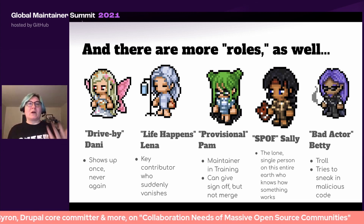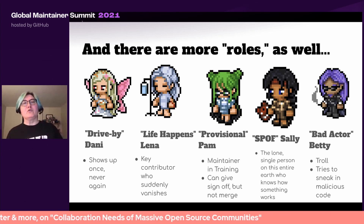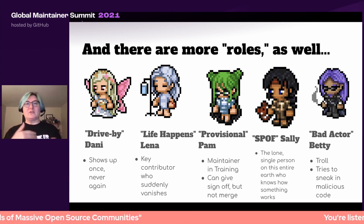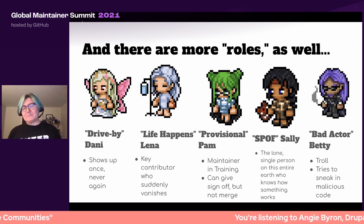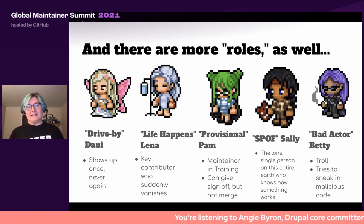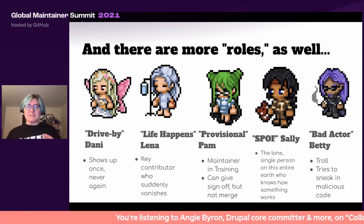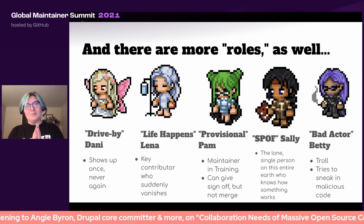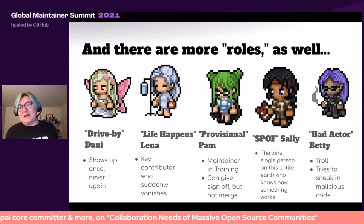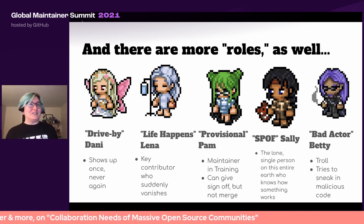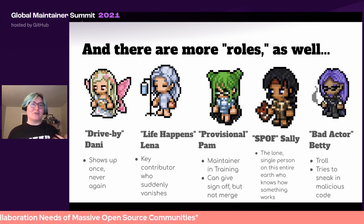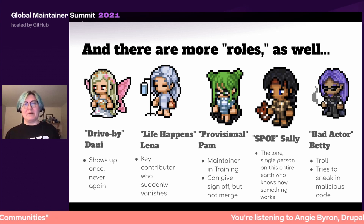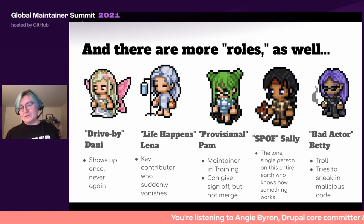There's Provisional PAM — one of the ways you help is, as Miles was saying, you bring on new maintainers, but you might want that maintainer to be in training so they can sign off but not necessarily merge things. You have Single Point of Failure Sally — the lone single person in the entire world who knows how that one particular something works, and God help your project if anything ever happens to her. And finally you might have Bad Actor Betty, who's a troll, looking for trouble, trying to actually cause your project pain. So that assumption that everybody's trustworthy and has the best project's interest at heart — you can't rock with that assumption.